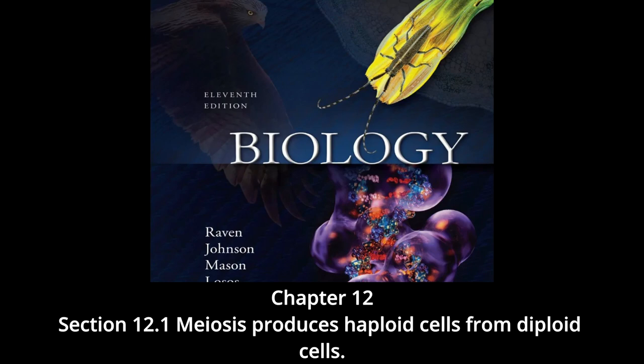From his observations, van Beneden proposed in 1887 that an egg and a sperm, each containing half the complement of chromosomes found in other cells, fuse to produce a single cell called a zygote. The zygote, like all of the somatic cells ultimately derived from it, contains two copies of each chromosome. The fusion of gametes to form a new cell is called fertilization, or syngamy.